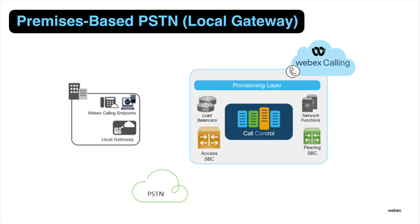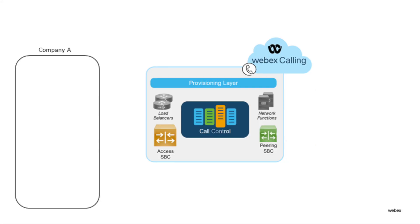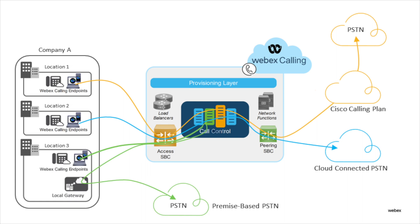When you have a local gateway deployed and registered to WebEx Calling, say you make an outbound call to the PSTN — that call goes to WebEx Calling, but if that number is not known within your organization, the call is sent back out to the local gateway, which then routes the call to the PSTN. The local gateway is commonly deployed on the customer's premises but can also be hosted by a partner. You're not limited to one option — you can use any combination of Cisco Calling Plans, cloud-connected PSTN, or local gateway-based PSTN options across different sites, even in separate countries.